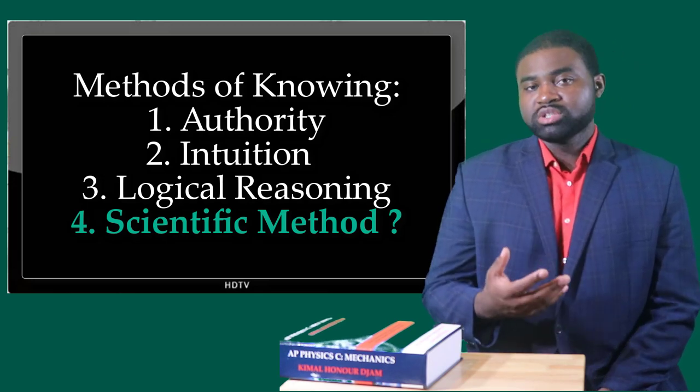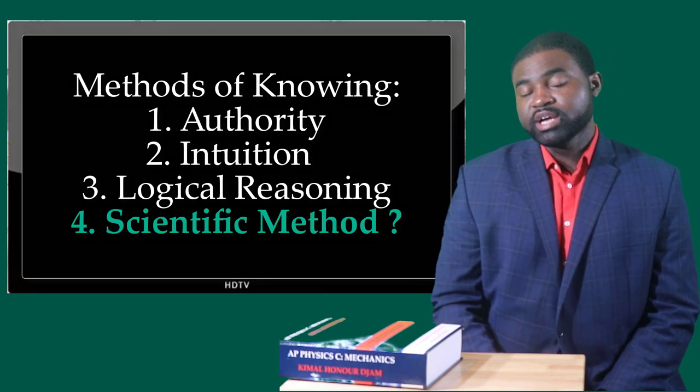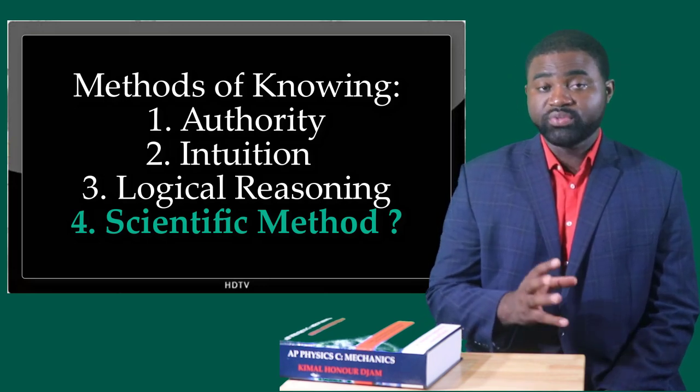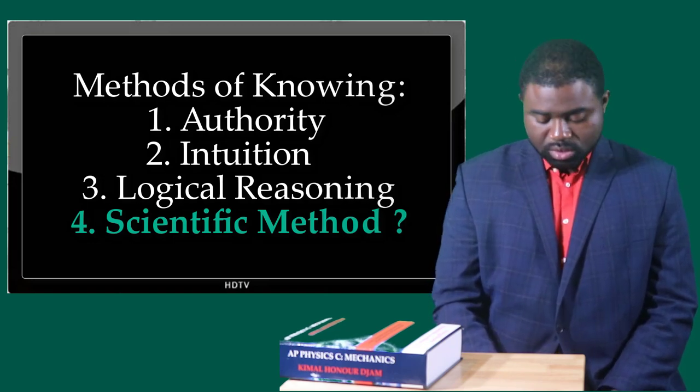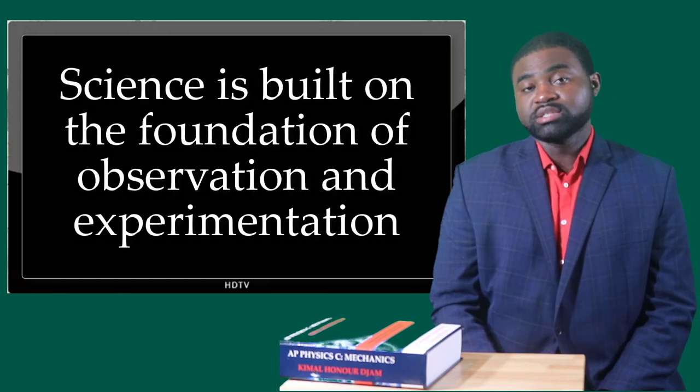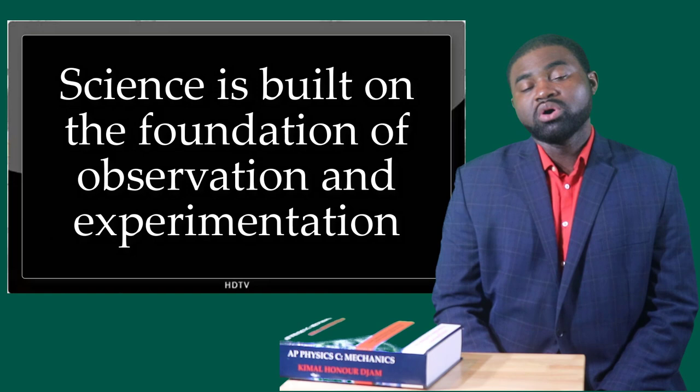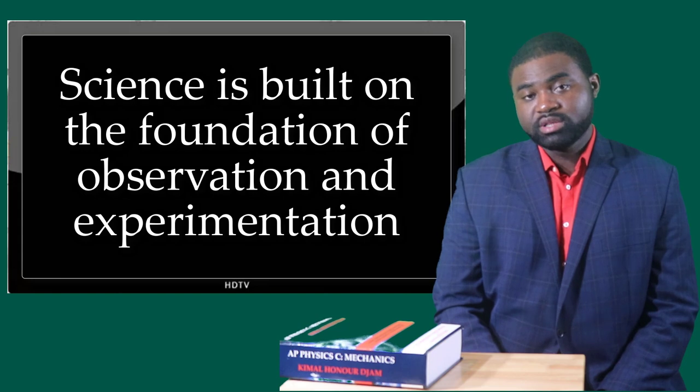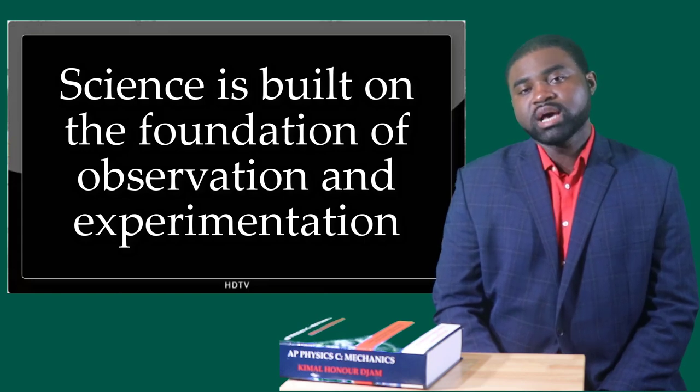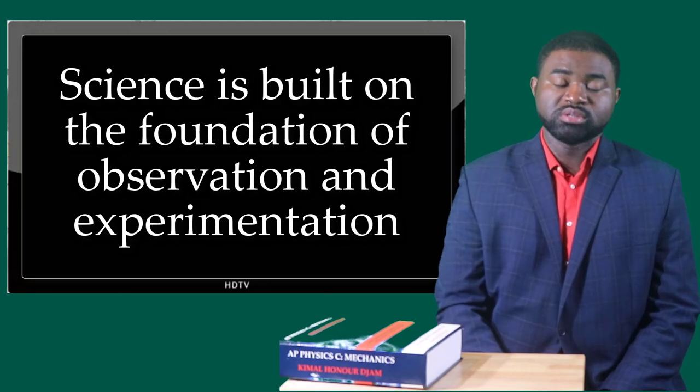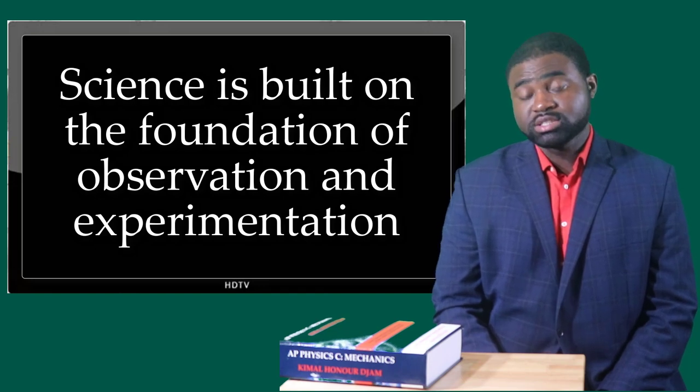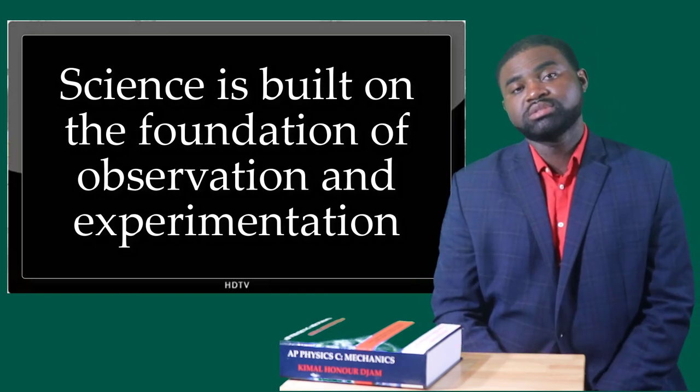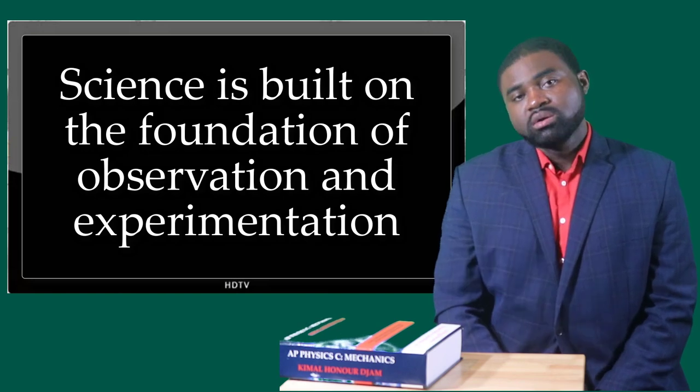So this brings us to this lesson about the scientific method, which is a systematic way through which scientists acquire reliable information. Keep in mind that science itself is built on the foundation of observations and experimentations. This actually makes science empirical in nature. So when I use the word empirical, I essentially imply that science depends on experimentations and observations.